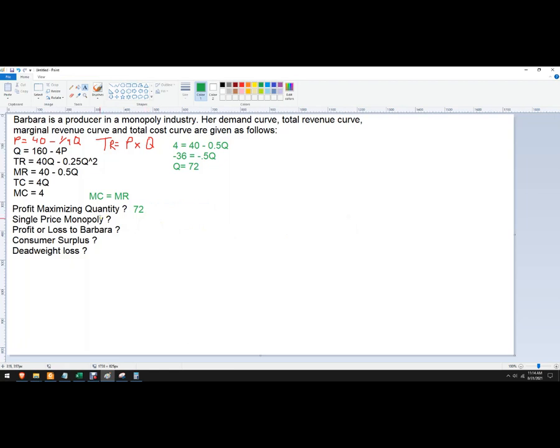Now the single price monopoly price. What we're going to do is we're going to take that quantity, we're going to plug it back into this initial one. This will kick out the price.